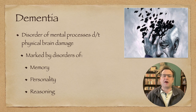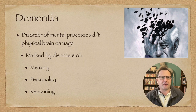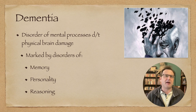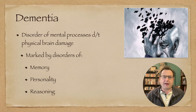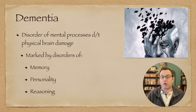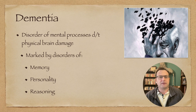Dementia is any disorder of mental processes due to physical brain damage. The most common types involve memory dysfunction, personality dysfunction, or reasoning dysfunction. The key difference between dementia and psychological disorders is that dementia is related to physical degradation of the brain — you could almost think of it as chronic brain disease. The patient can no longer do certain things because the brain physically cannot do them anymore. A psychological disorder, by contrast, involves a chemical imbalance, a behavior, or both, which may be altered with a combination of therapy and a drug regimen.